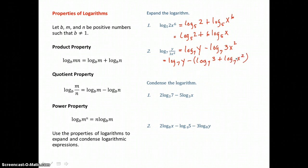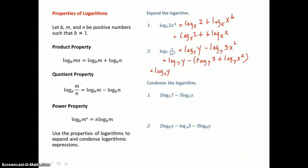Now inside the parentheses I have an exponent on x. I want to use the power property and bring that exponent out front of the log as a factor. So distributing, negative times a positive is a negative log base 7 of 3, and negative times a positive again gives a negative — remembering we're bringing that 2 out front as a factor — so negative 2 times log base 7 of x. Now this log is completely expanded and we've removed parentheses as well.